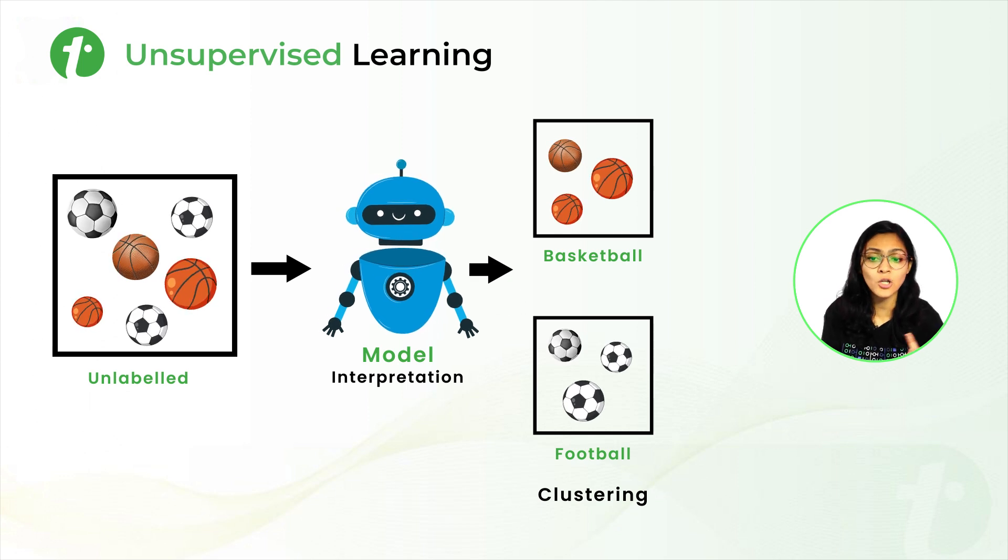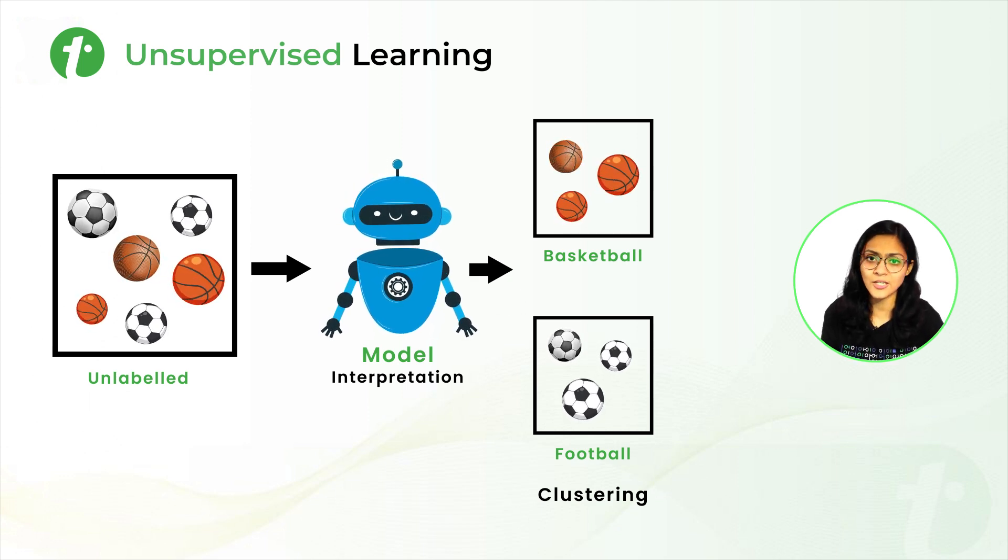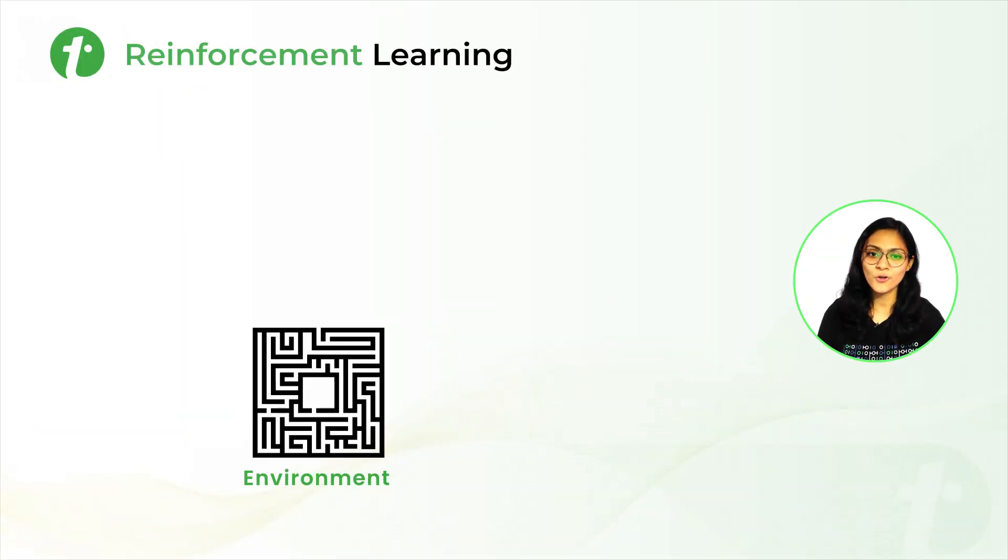It may be the color of the ball, the lines on the ball, or the way it is played by foot or by hand. Next is Reinforcement Learning.